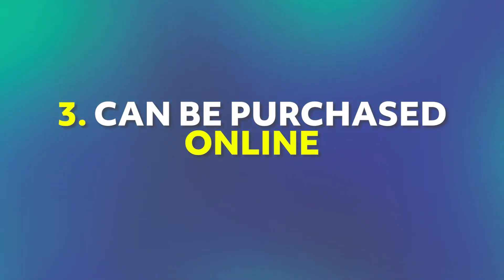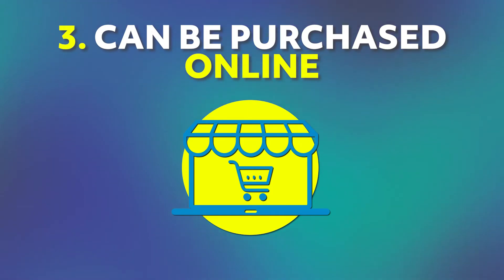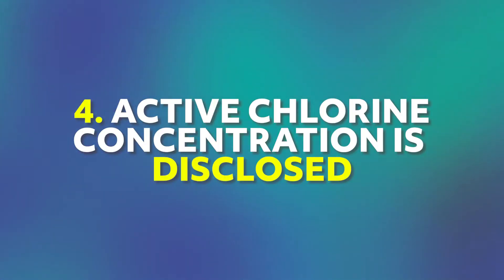The other benefit is that granular chlorine can be purchased online, which is more convenient. They also very clearly state the active chlorine concentration — you'll see things like 700 grams per liter of active chlorine concentration. You know exactly how much chlorine you're going to get for every kilogram or liter you add, which is really useful.